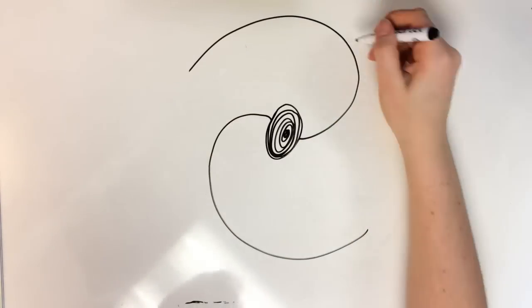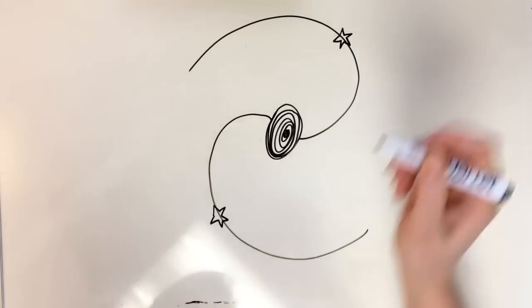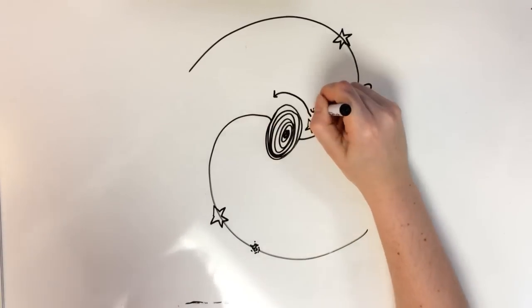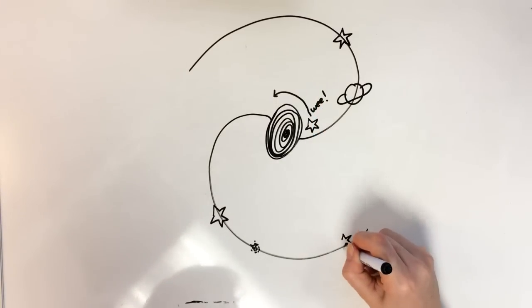Take the Milky Way. Stars, planets, nebulas, all orbit the center of the galaxy. You'd think the stuff closer to the center would orbit faster, but it doesn't. Everything orbits at the same speed.